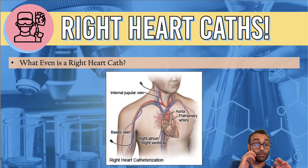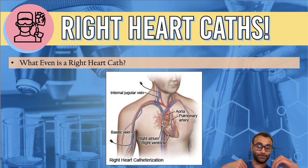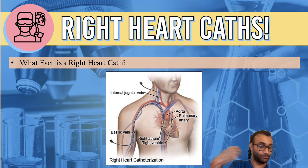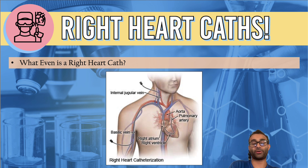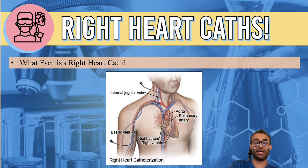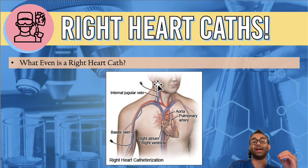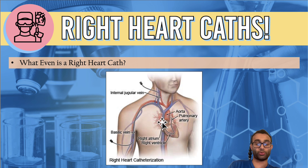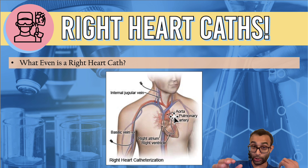Let's talk about what actually is a right heart cath. This is often referred to, if someone has the catheter for a right heart in their body, as a SWAN catheter, so you may also see it referred to that way. Ultimately, what a right heart cath is, is that they put in a catheter into your veins, and it goes all the way down into your right atrium, then to your right ventricle, and then eventually into your pulmonary arteries.